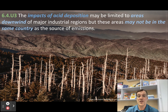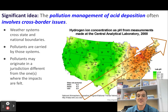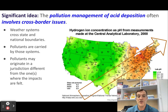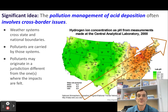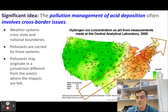Acid deposition isn't just a local problem — it's also a regional and a global one. The impacts may be limited to areas downwind of major industrial regions, but these areas may not be in the same state or even the same country as the source of emissions. This map here shows the prevailing wind direction in the United States and the concentration of hydrogen ions in precipitation. The heaviest areas are in the northeastern United States, meaning those pollutants have been carried from the southwest. Sulfur dioxide and oxides of nitrogen emitted from coal-burning power plants in China can travel all the way across the Pacific Ocean and cause acid rain in North America.